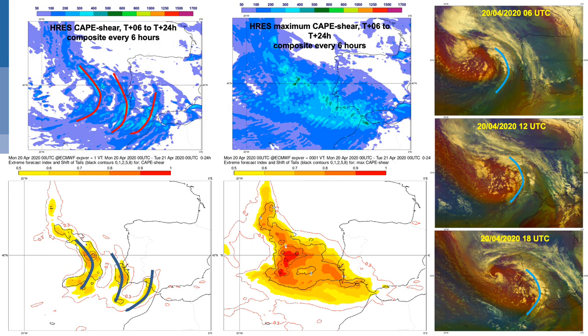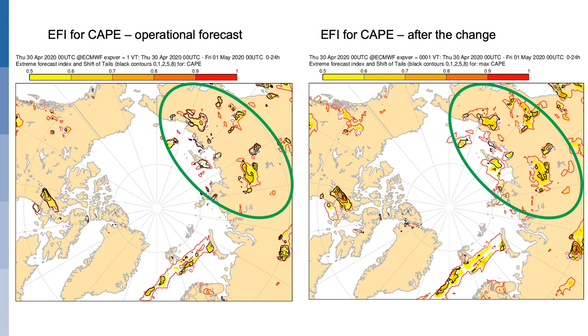The EFI can exhibit a stripy structure in the case of fast-moving cold fronts with a lot of convective activity, as in the example shown here. This is an issue as the cold front is not jumping but is moving continuously. Using the new parameters removes the stripy behavior and provides a smoother and more realistic forecast field due to better sampling.